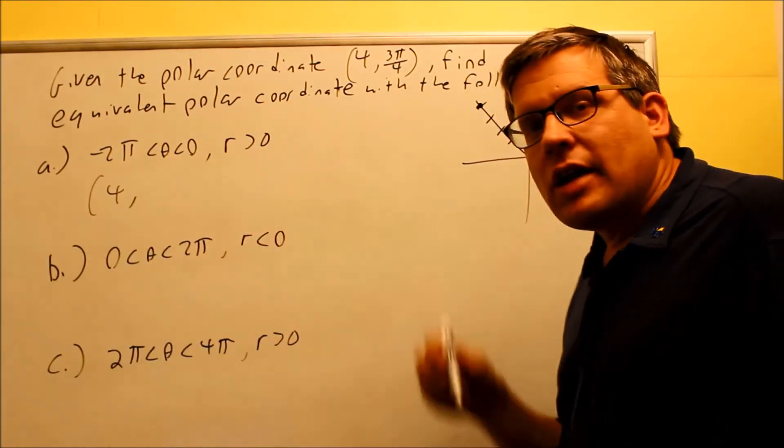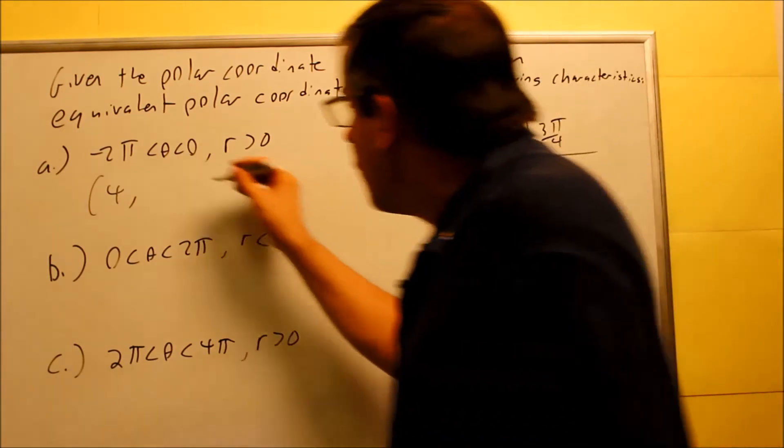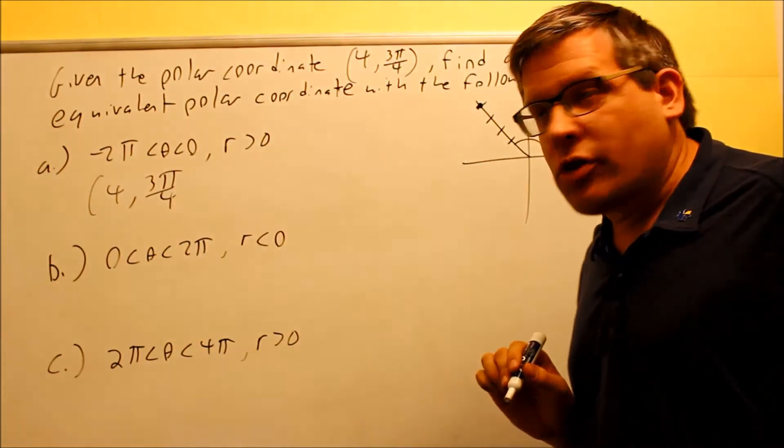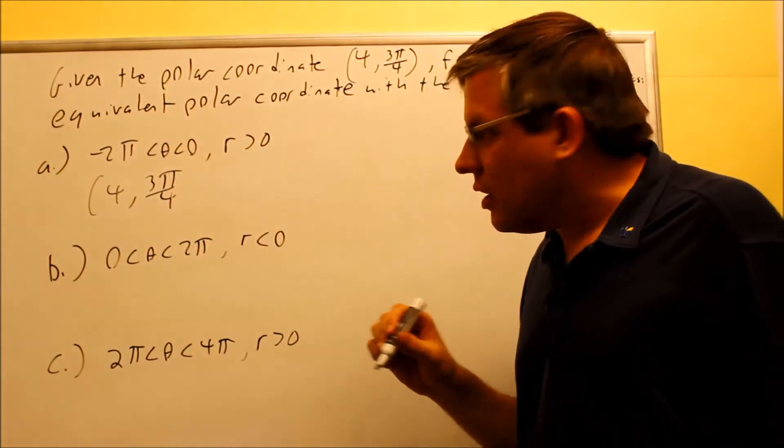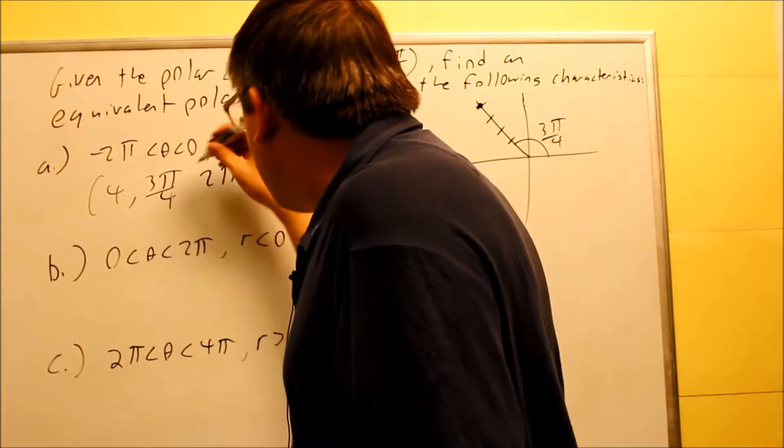We have to choose to either add or subtract 2π to that angle there, 3π/4. The condition is going to tell you whether you want to add or subtract. I want my result to be a negative angle, which means I'm going to choose to subtract 2π.